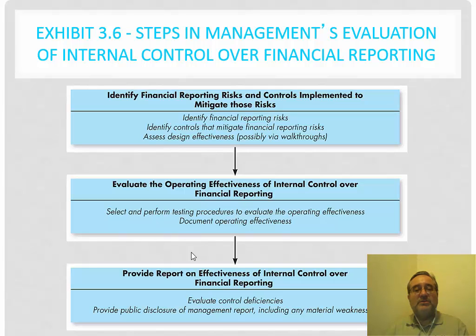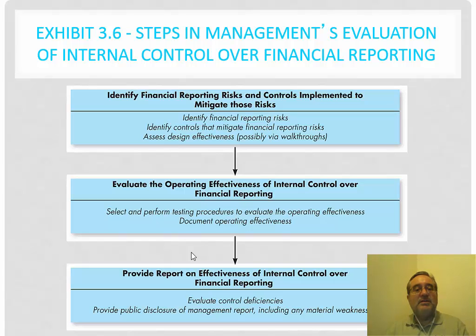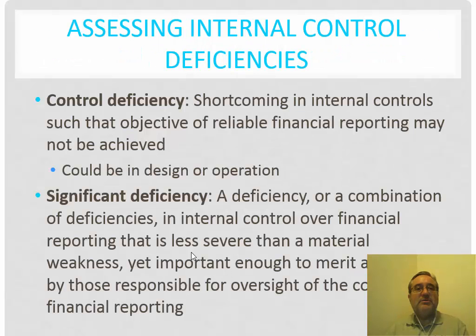The internal control group reports to senior management in terms of the finance department and higher within the organization. The control testing information becomes part of the effectiveness report, which is then integrated into the financial statements as well as the auditor's report — covering not only the audit of the financial statements, but also the auditor's opinion regarding the internal controls.